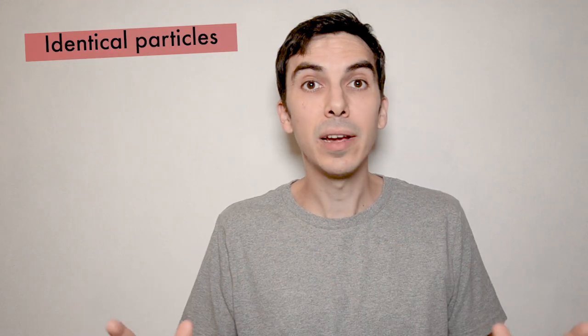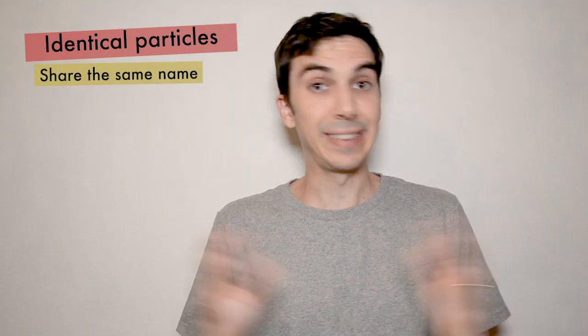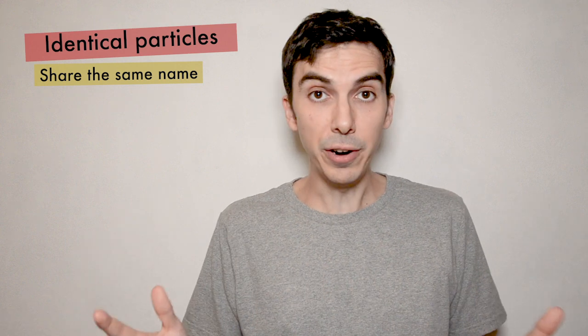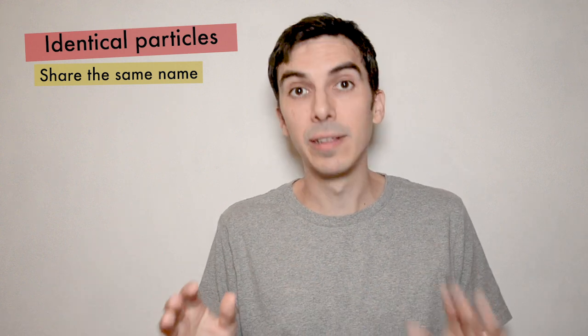Identical particles are easy to understand intuitively. Two particles are identical if we give them the same name. For example, all electrons are identical to each other and all protons are identical to each other. However, electrons are not identical to protons.